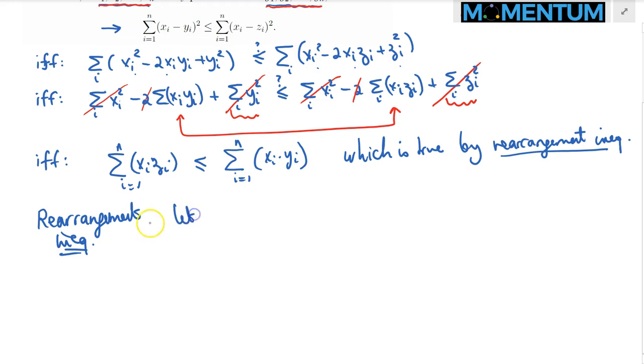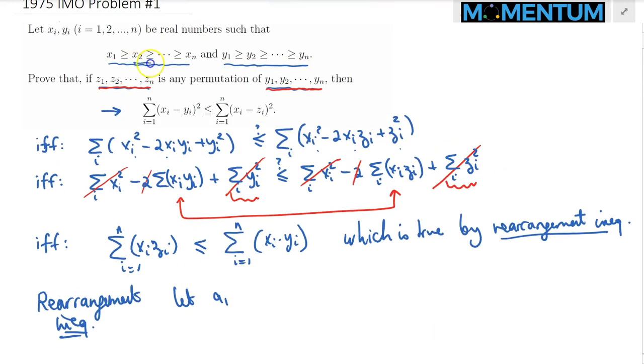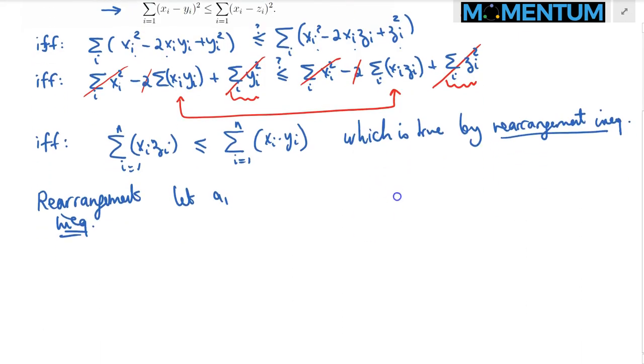The main statement tells you that, in this case, because these are decreasing, I will just write the statement similar to that. So a sub 1 is greater than or equal to a sub 2, all the way up to a sub n. And similarly, b sub 1 greater than or equal to b sub 2 greater than or equal to b sub n.